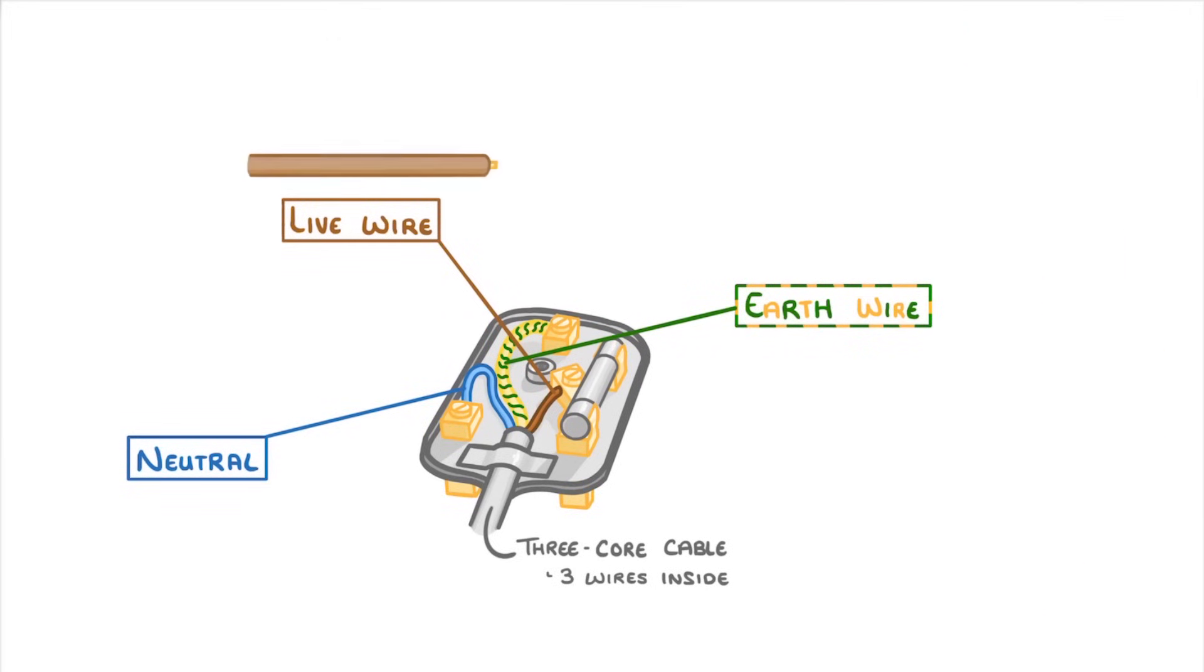The live wire is brown and is the one that provides the alternating potential difference of around 230 volts from the mains supply.